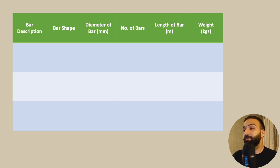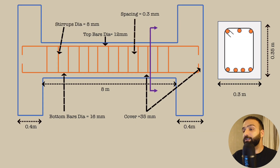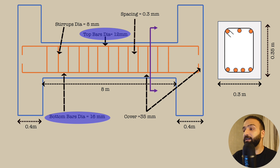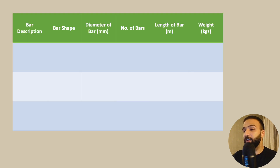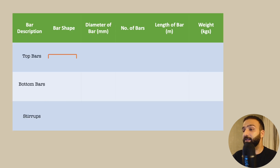Here is the table that we need to fill out. We need to fill out the bar description, the shape of the bar, the diameter of the bar, the number of bars, the length of the bars, and the weight of the bars. We have three basic types of bars: top bars, bottom bars, and stirrups. The shape of the bars is clear in the drawing — the top bars, bottom bars, and stirrups each have their respective shapes.